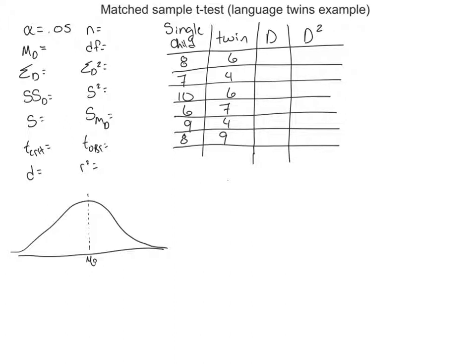What we're trying to find out is, compared to single children, do twins acquire language basically slower? So we're really looking for a negative number here because we're comparing the twins against these single, or only, children.